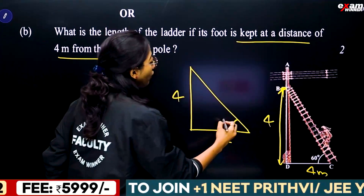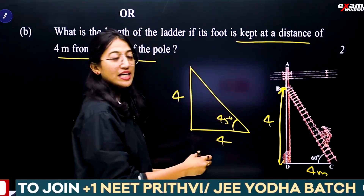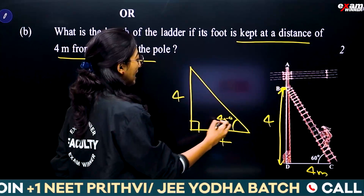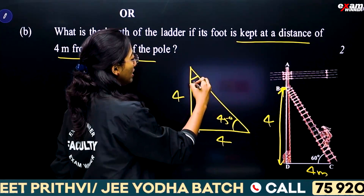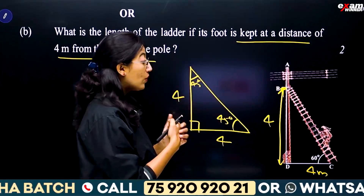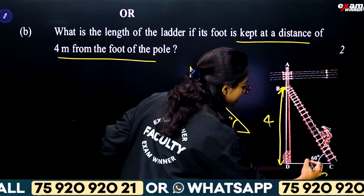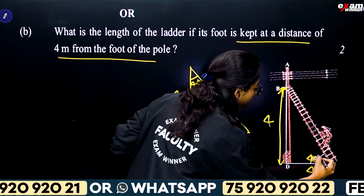With the ladder foot placed at a 4-meter distance from the pole, the angle formed at the base is 45 degrees. So we have a right triangle where the base angle is 45 degrees and the base is 4 meters.